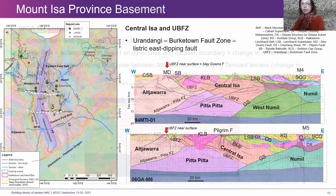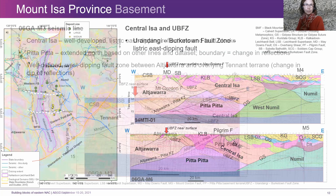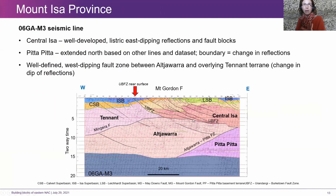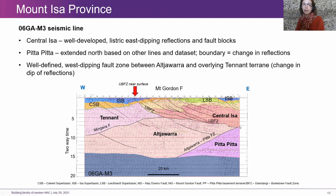Now jumping north to the short M3 line. The first thing you see on this line is the strong east-dipping reflections — when you look at the blank seismic you can really see that thrust package, which correlates with Central Isa. You could push that boundary up or down a little bit but you'd still have that same geometry. Pitta Pitta might swing a bit further east — we may not have it here — but there is a change in the seismic that we looked at and decided it's reasonable Pitta Pitta might sneak into the end of the seismic line. This is the only line where we really see the Tenant terrain, and you can see the west-dipping reflections are quite well developed though discontinuous in Tenant, whereas all the reflections in Alchawara dip to the east, so that fault is quite well defined.